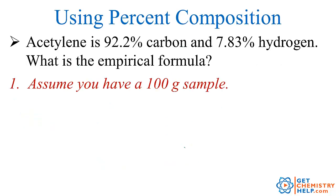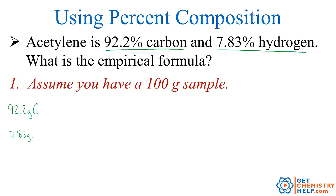The way we'll more commonly find the empirical formula is given percent composition data. Let's work an example for acetylene. Acetylene is 92.2% carbon and 7.83% hydrogen. Our first step is to assume we have a 100-gram sample. If these percentages are out of 100 grams, then these percentages become grams: 92.2 grams of carbon and 7.83 grams of hydrogen.